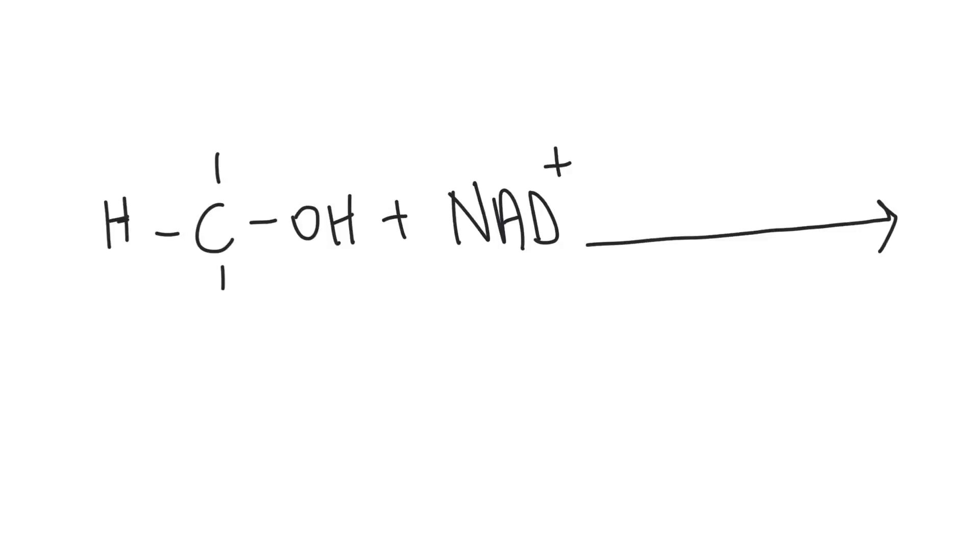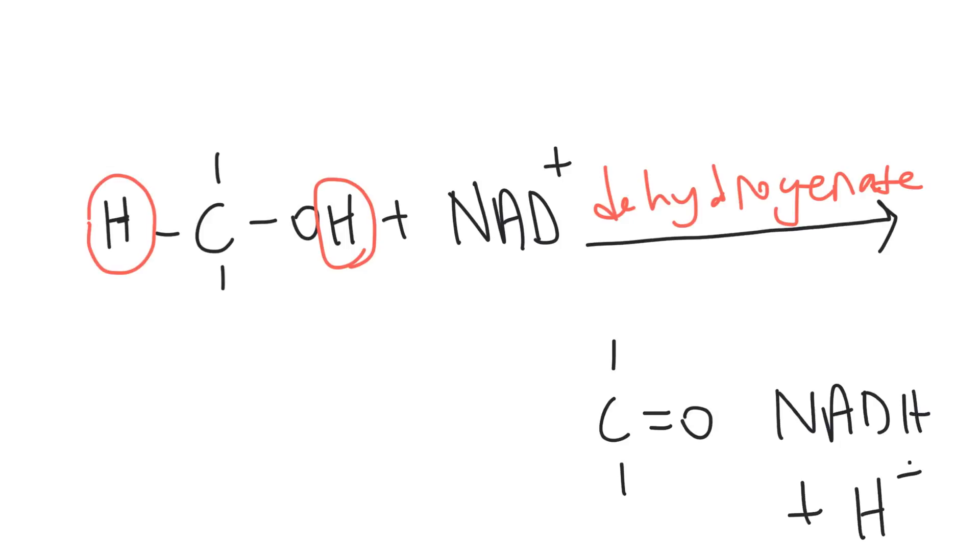Well, how does NAD trap electrons from glucose and other organic molecules? Actually, enzymes called dehydrogenases remove a pair of hydrogen atoms, which means two electrons and two protons from the substrate. So this is one hydrogen and this is the other hydrogen. And the enzyme dehydrogenase removes them off. We get NADH plus hydrogen.